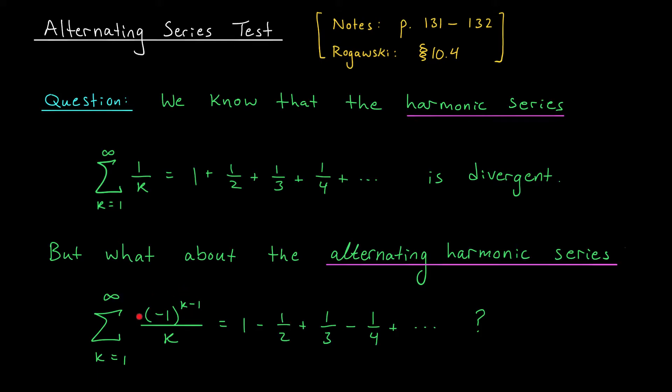This sign flipping business is achieved by a term like this: minus 1 to the k or minus 1 to the k minus 1. It flips between plus and minus 1. The question is, does this new series converge or diverge?